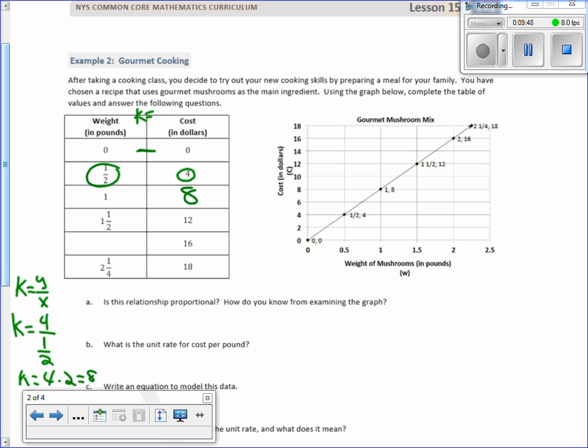So for every half pound, we're increasing by four. One times eight: one half times eight is four, one times eight is eight, one and a half times eight is twelve. And then to go this way, we would divide sixteen divided by eight, our k, will equal our x, so that would be two. Two and a quarter times eight is eighteen. And here are the points on the graph.